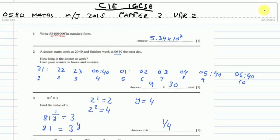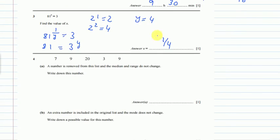Now let's move on to question number 4. A number is removed from this list and the median and the range do not change. So what is the median and the range? We should know that to get the answer. Now the range is the highest number which is 20 minus the lowest number which is 3. So if we change one of these numbers, the range will change.